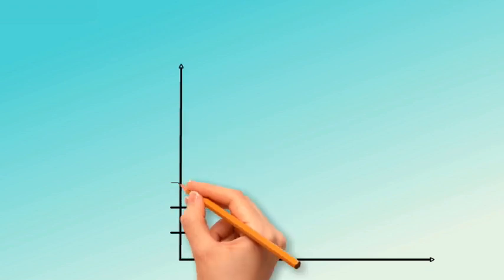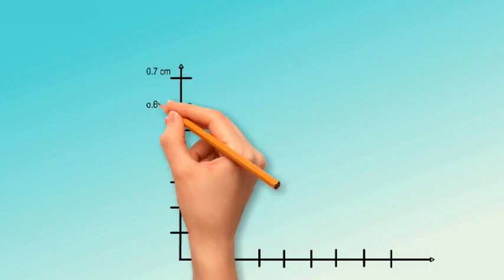This means that if we plot the force versus the displacement of the spring, we will get a straight line with a slope equal to the spring constant.